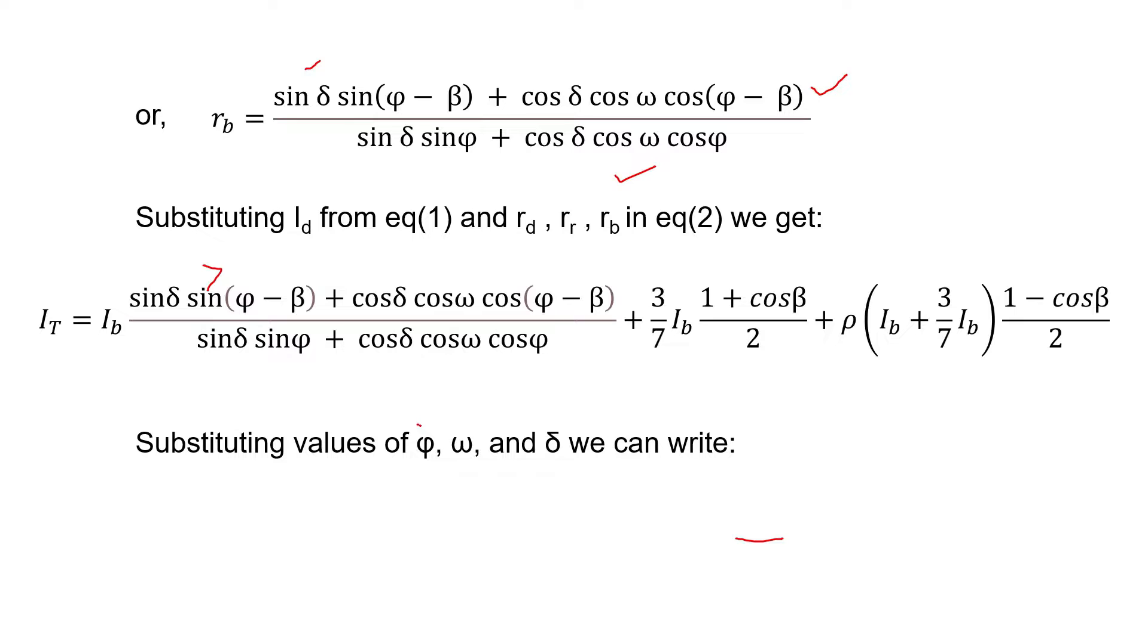Now if we substitute values of phi, omega, and delta in this expression, after doing some simplification, we get It equal to Ib times [minus tan delta sin beta plus cos beta plus 1/7 times (2 plus cos beta)].